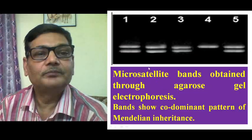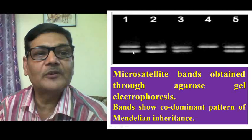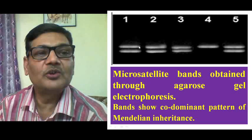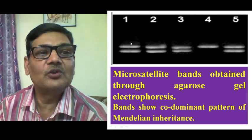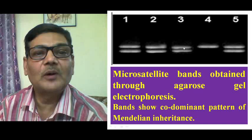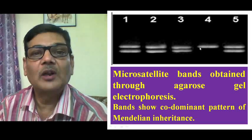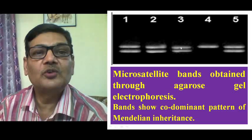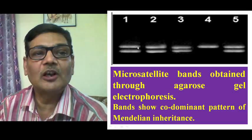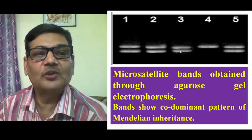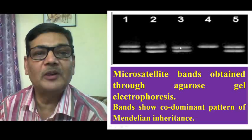In this diagram you can see the expression of microsatellite segments. Here two DNA segments are present, meaning this individual is showing two variants — or two alleles — of a microsatellite segment. Individual two is also having the same genotype. Individual three also has two variants or two alternative forms. Individual four is homozygous, meaning only one form is present. The others — individuals one, two, three, and five — are heterozygous individuals. In all these cases two alleles are present, and both alleles are equally expressed, which is a situation similar to a co-dominant pattern of inheritance.